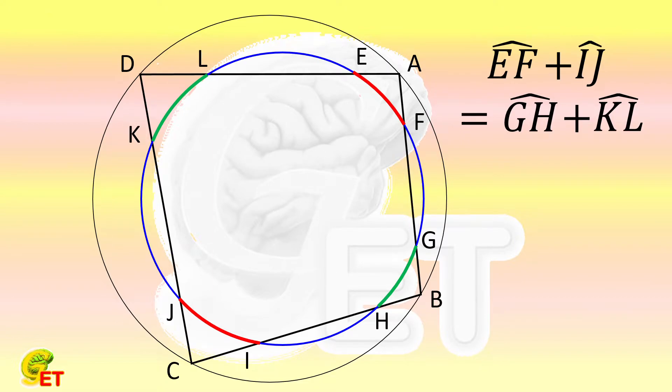Let's first look at what the known conditions and the conclusion to be proved actually mean. As we all know, the arc on the circle actually refers to the central angle.